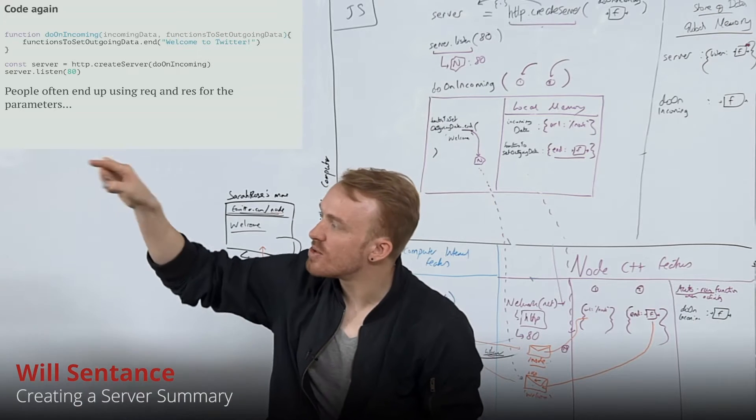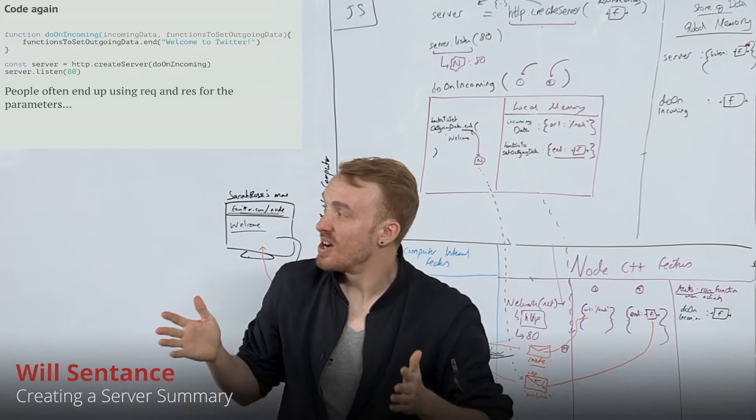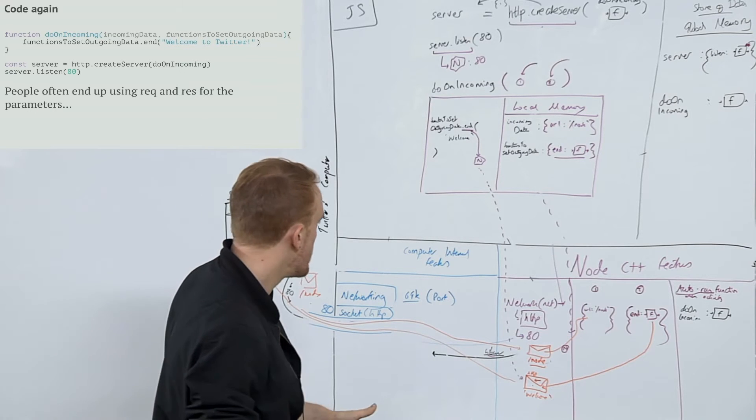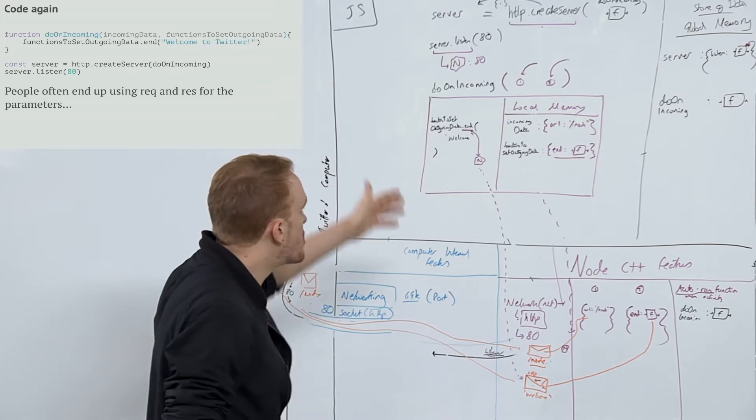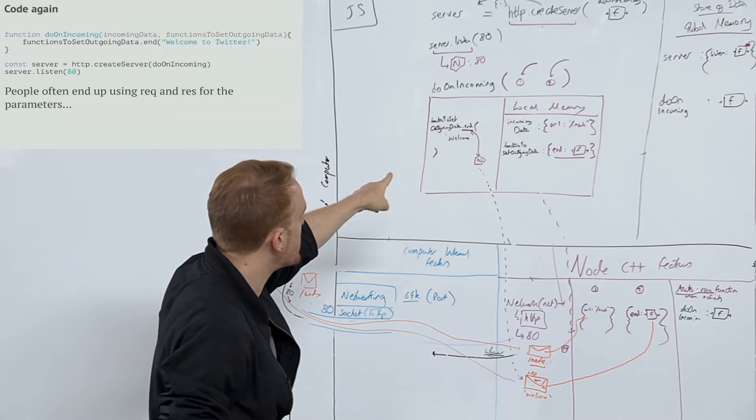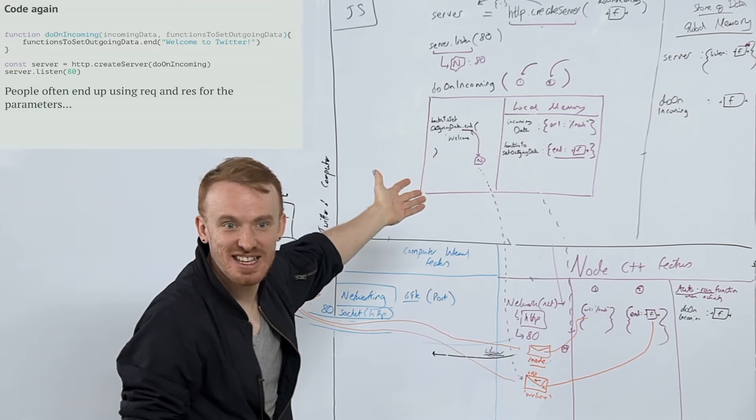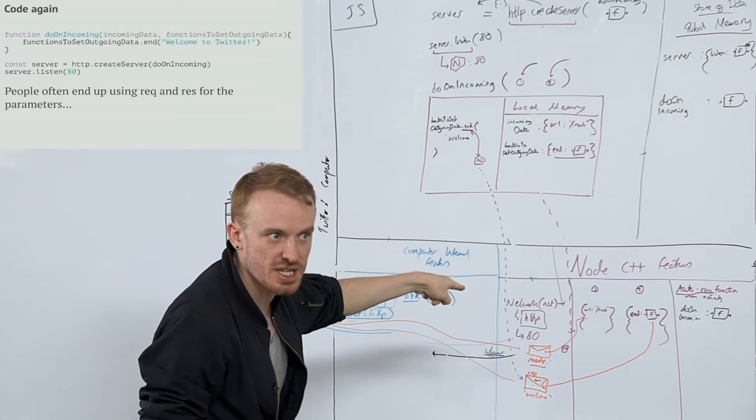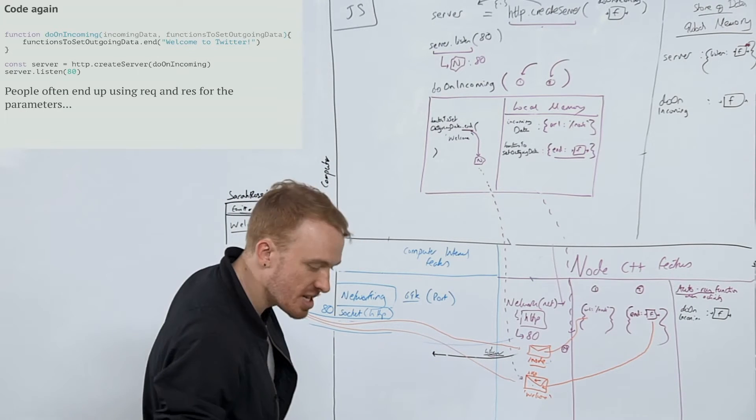We have in one, two, three lines of JavaScript built an entire server because in JavaScript, all the black stuff is JavaScript, there's not many words done in black. All the purple stuff is built in Node features and damn, look at that.